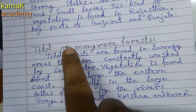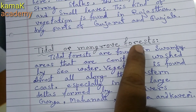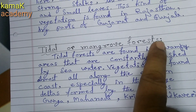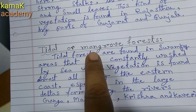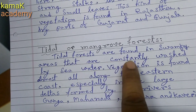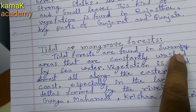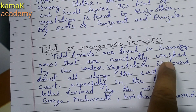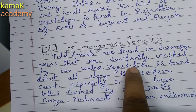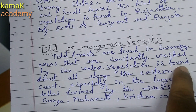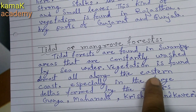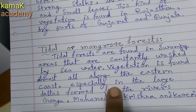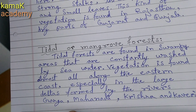Next point: Tidal or Mangrove Forest — use black ink, give colon and underline. Tidal forests are found in swampy areas that are constantly washed by seawater. This vegetation is found almost all along the eastern coast, especially in the large deltas formed by the rivers Ganga, Mahanadi, Krishna and Cauvery.